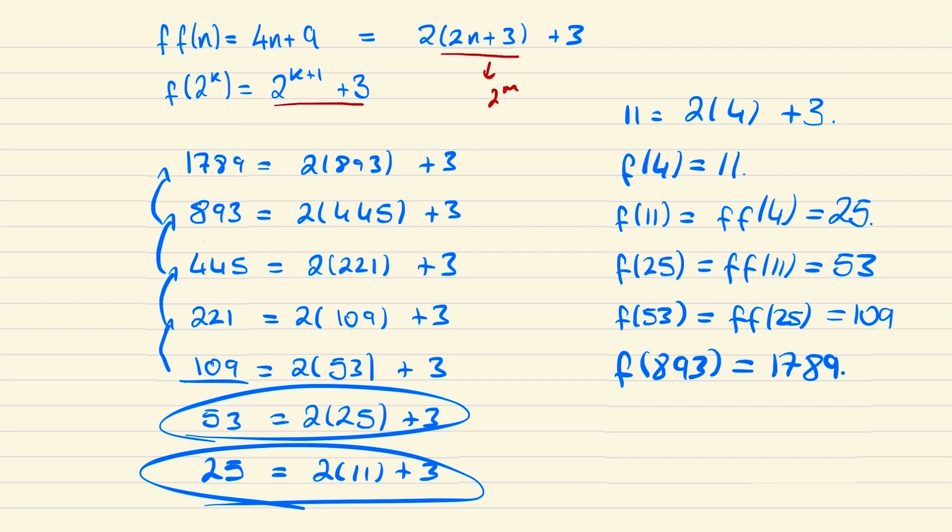And hence f(1789) will be f(f(893)). Substituting this into our 4n + 9, we get that this will be 3581, and so we're done.